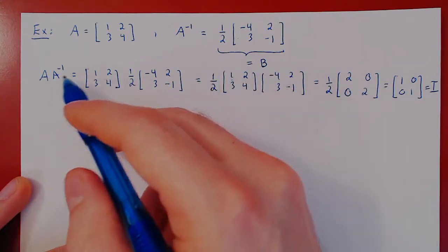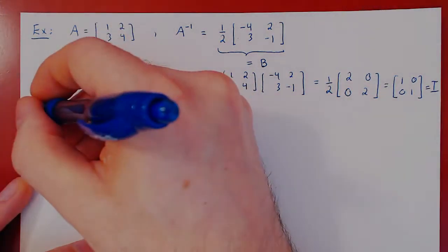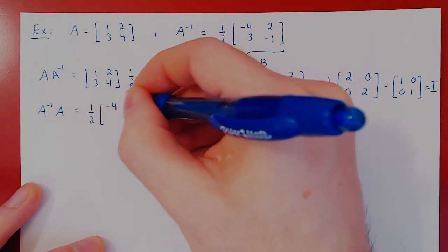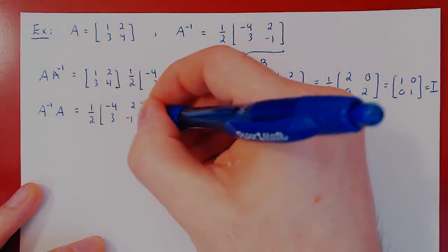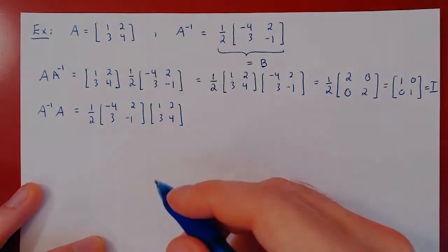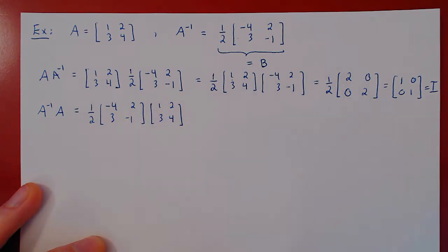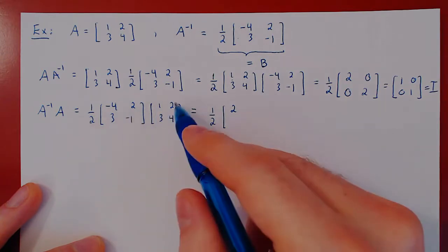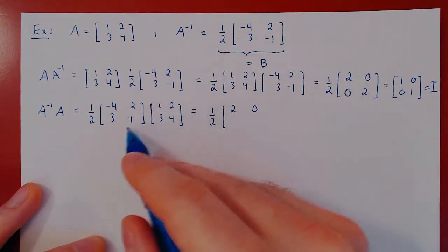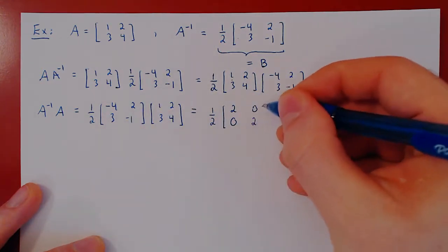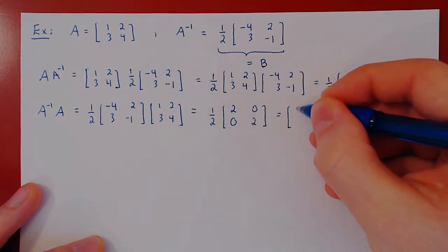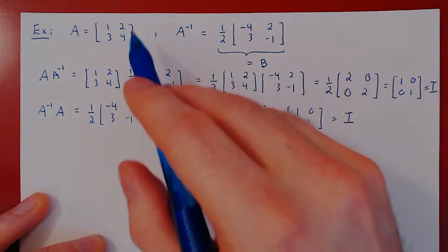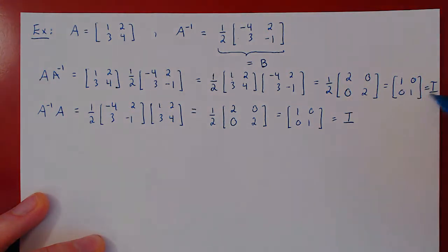The matrix B cancels from the right the matrix A. Let's check the other direction — that A inverse times A, that B times A also equals I. Here the scalar multiple of 1 half is already up front, so we can right away perform the matrix multiplication. We get 1 half times: first row, negative 4 plus 6 is positive 2, negative 8 plus 8 is 0; second row, 3 minus 3 is 0, 6 minus 2 is positive 2. Multiplying by 1 half gives the 2 by 2 identity matrix. So this matrix is indeed the inverse of this one, as the product in both directions gives us the 2 by 2 identity matrix.